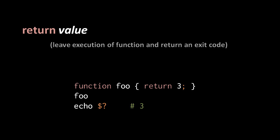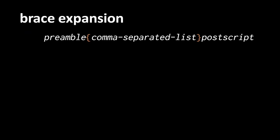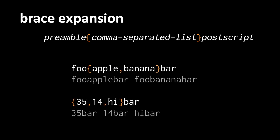Beyond variable expansion, there are other kinds of expansion — including brace expansion. An argument using brace expansion contains a pair of curly braces not preceded by a dollar sign. Inside the braces is a comma-separated list; optionally, before the braces is a preamble and after them a postscript. For example, 'foo{apple,banana}bar' expands into 'fooapplebar foobananabar' — each comma-separated item gets surrounded by the preamble and postscript, with results separated by spaces.